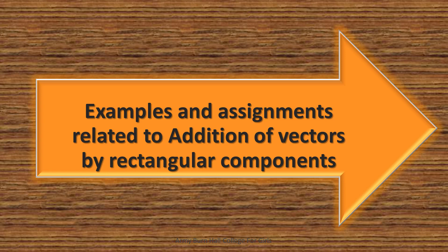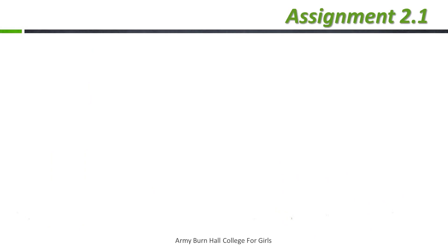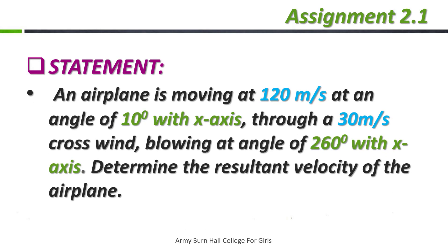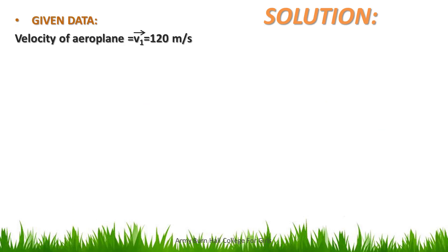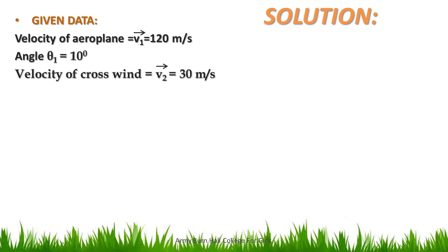Before moving towards examples and assignments, let's discuss assignment 2.1 first. The statement is: an airplane is moving at 120 meters per second at an angle of 10 degrees with the x-axis, through a 30 meters per second crosswind blowing at an angle of 260 degrees with the x-axis. Determine the resultant velocity of the aeroplane. We are provided with two velocities and two angles.